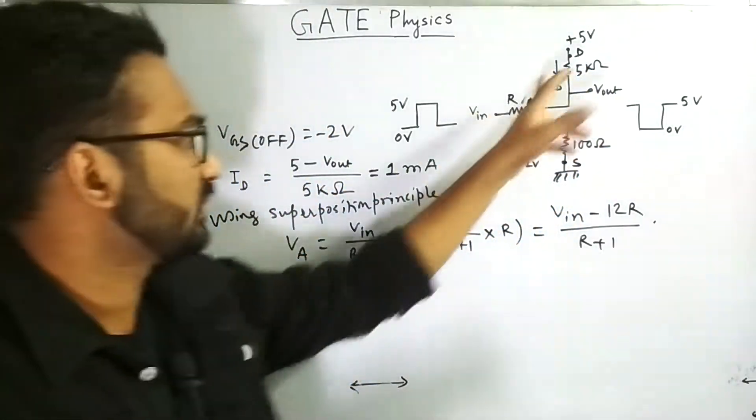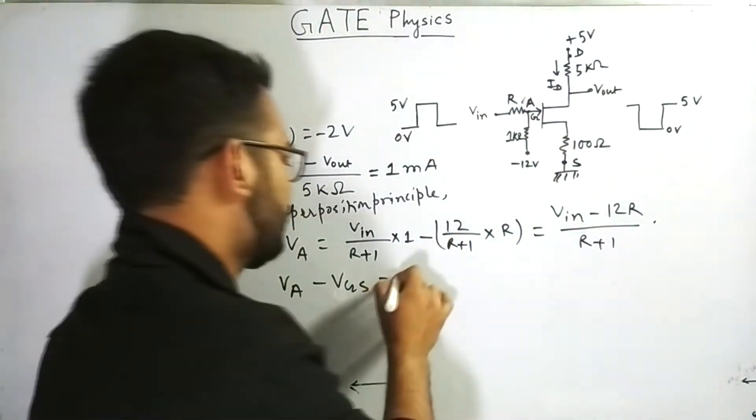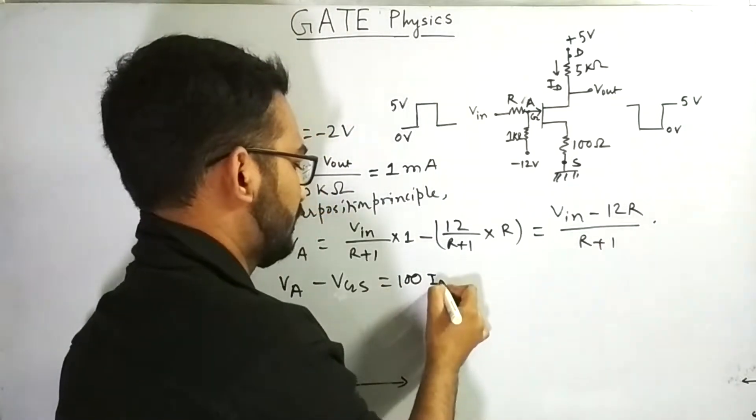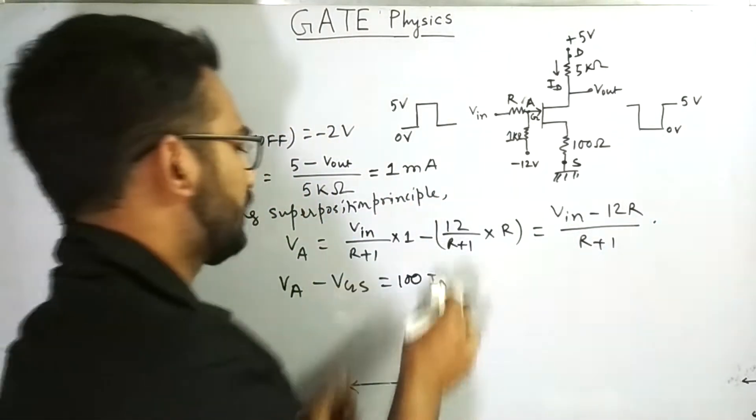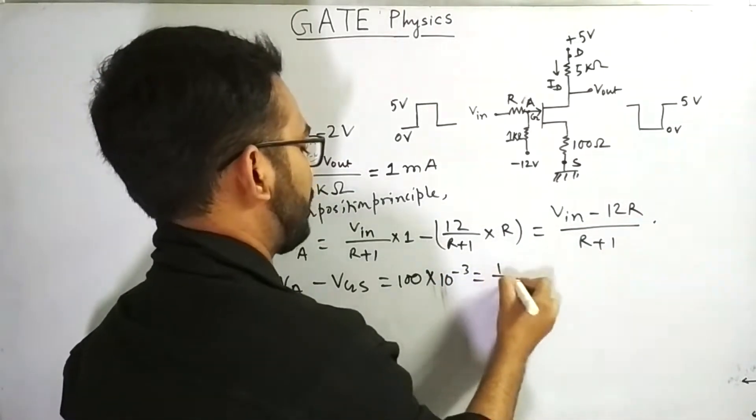We have already calculated ID. So same ID will flow through this resistance. So 100 into ID. So that is the voltage drop. Now, value of ID is equal to 1 milliampere. So it is basically 10 to the power minus 3 means 10 to the power minus 1 means 1 by 10.